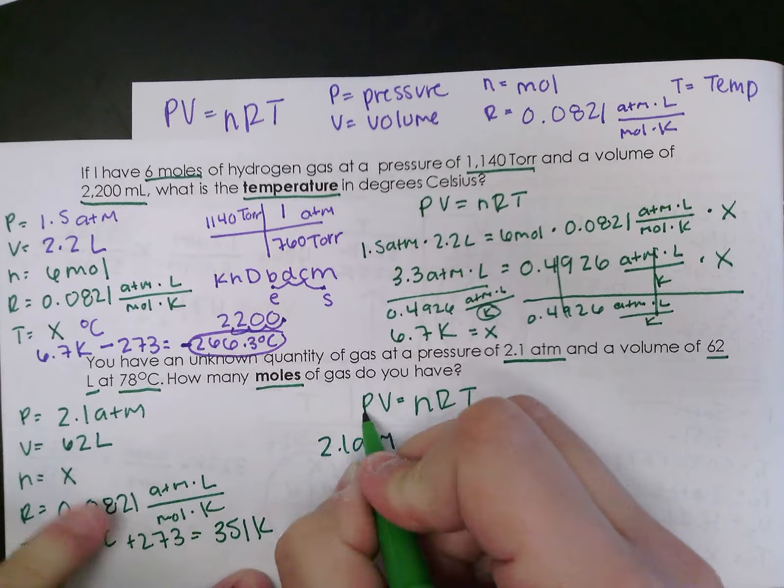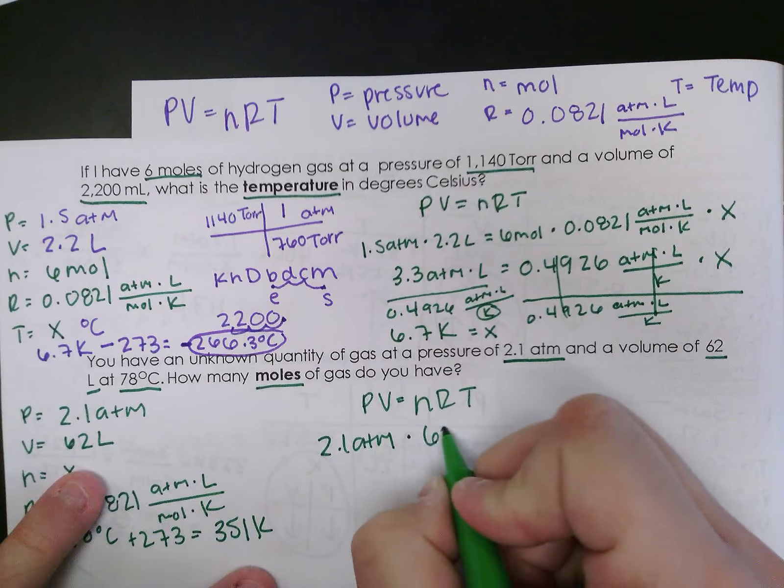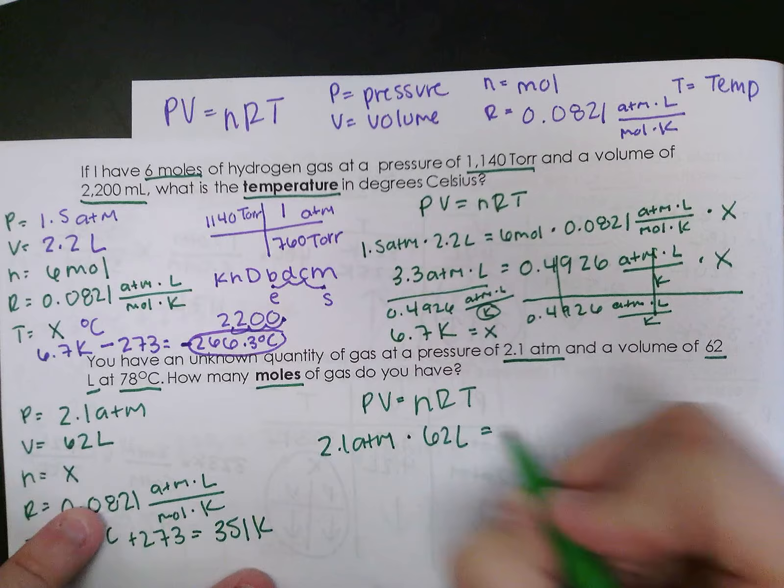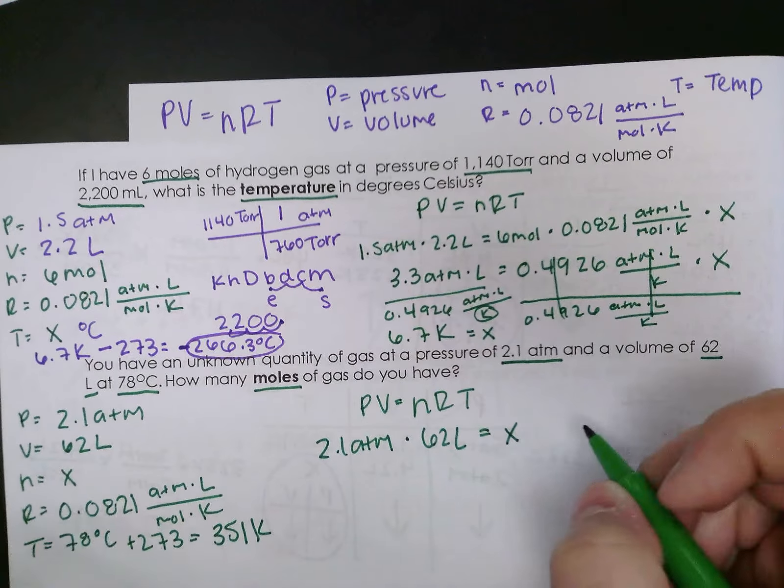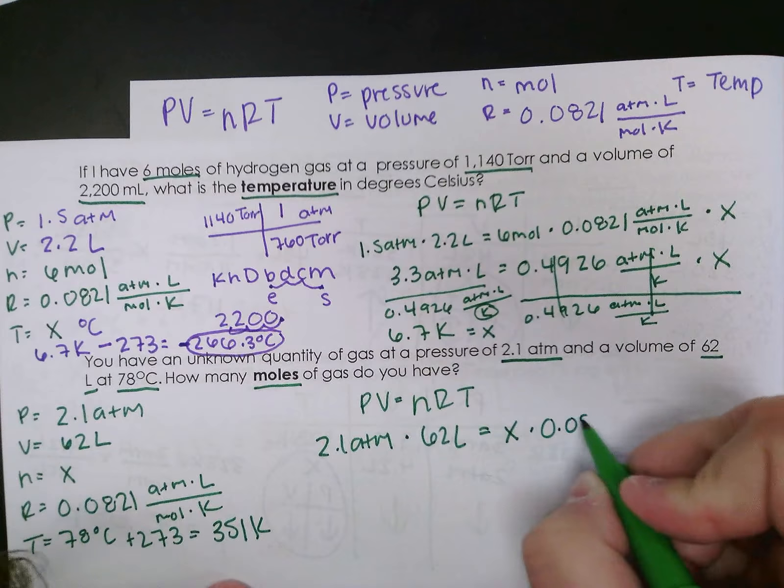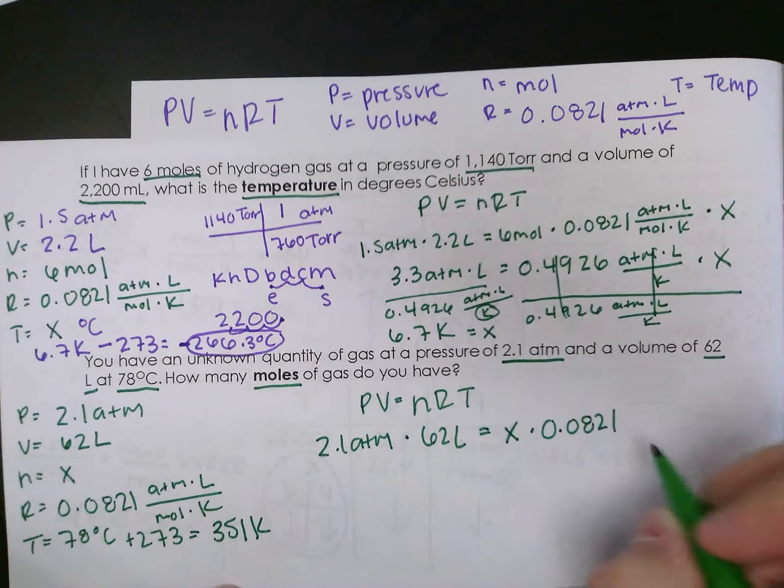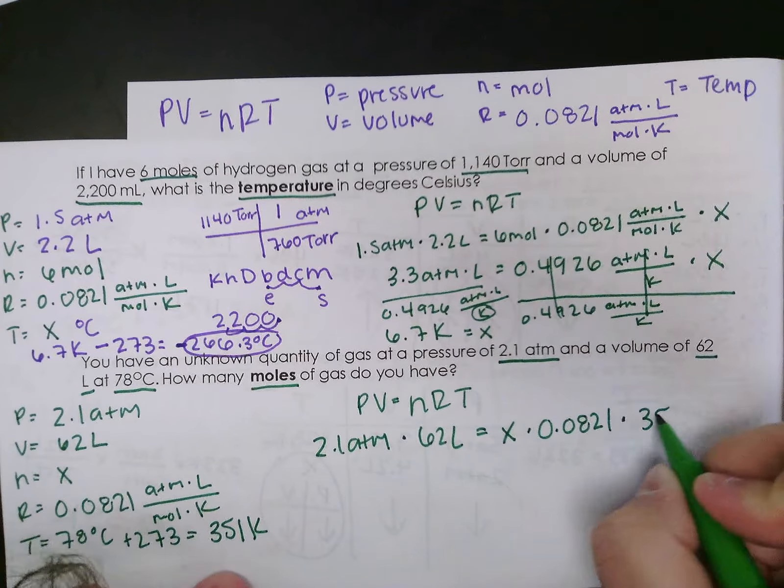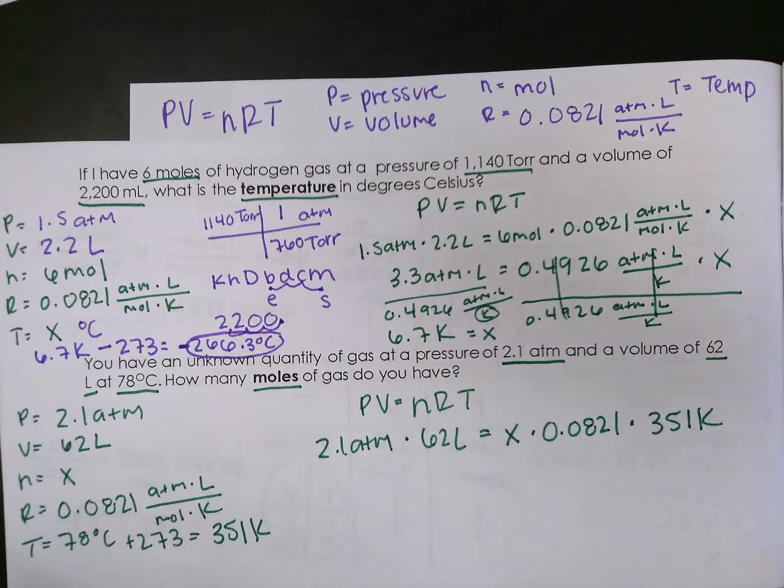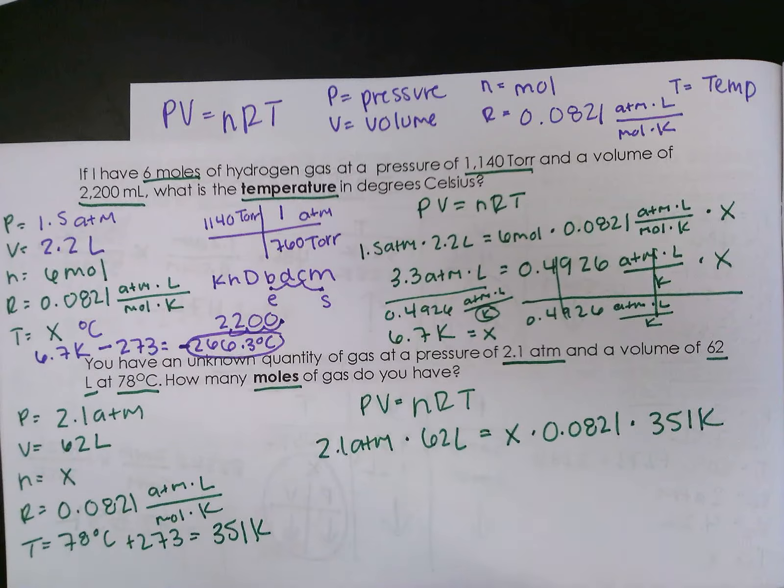2.1 atmospheres, because that's my pressure. 62 liters, because that's my volume. Looking for X. We'll get in my gas law constant for R. And my temperature for my T. Oh, I said I wasn't going to put units, and I still did. You know what's happening. It's fine.